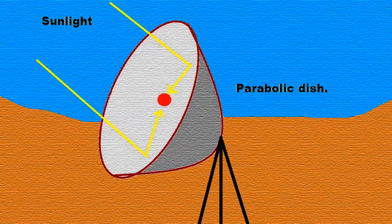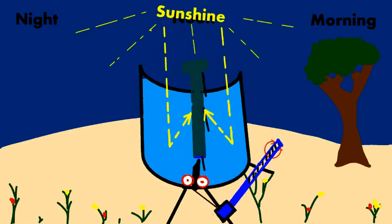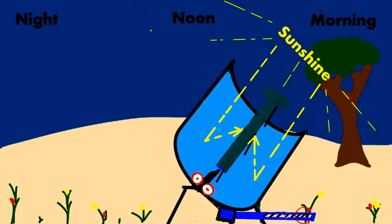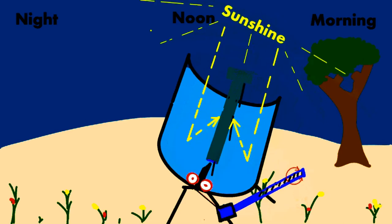Like the parabolic dish which can use a steam-driven engine in the middle, it has to track the sun during the day to concentrate as much of the sun's energy onto the engine for it to work properly.